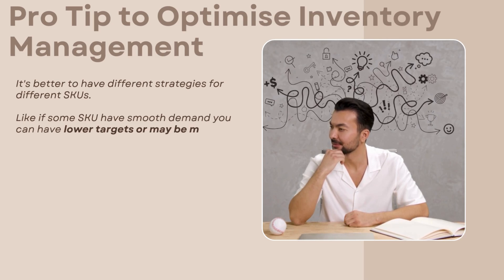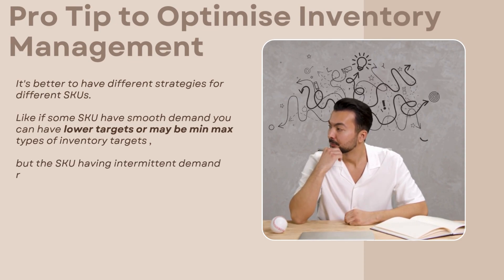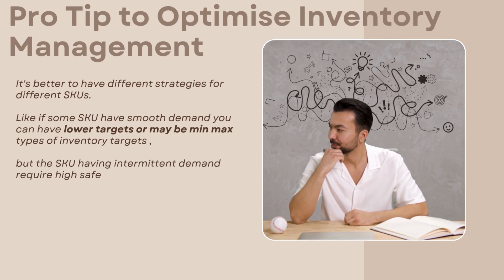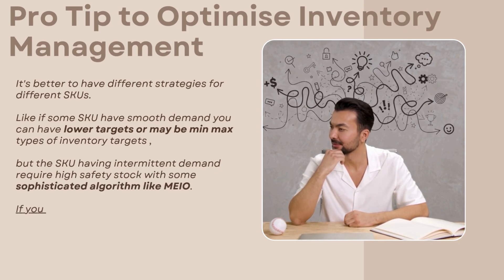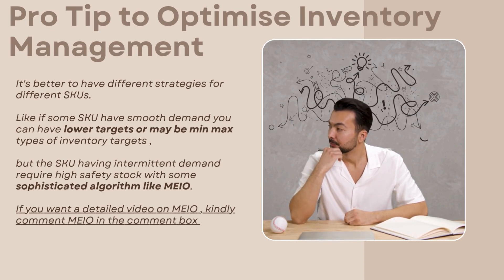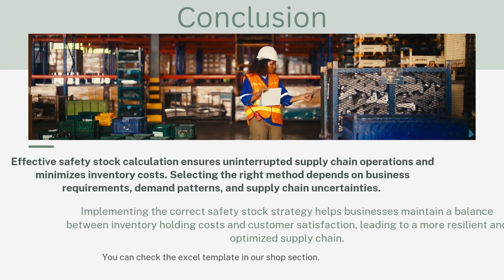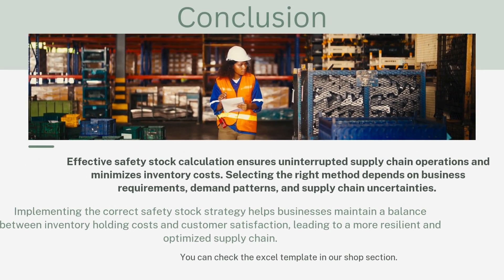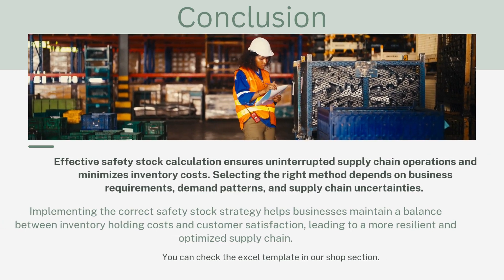Pro tip to optimize inventory management: It's better to have different strategies for different SKUs. If some SKUs have smooth demand, you can have lower targets or min-max types of inventory targets. SKUs with intermittent demand require high safety stock with a sophisticated algorithm like MEIO. If you want a detailed video on MEIO, comment 'MEIO' in the comment box.